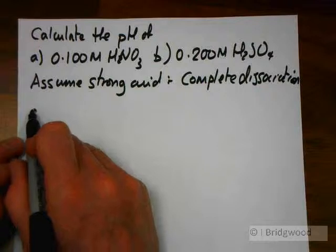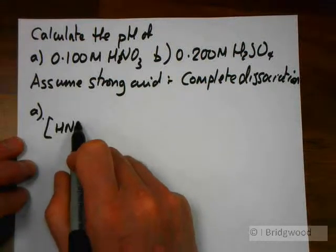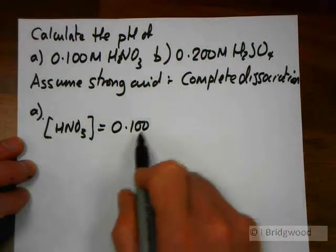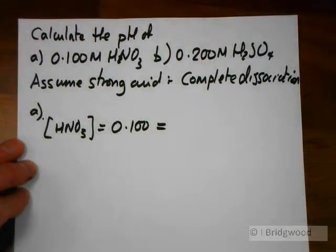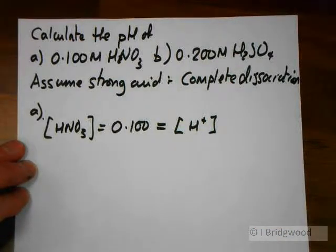So for the first one, fairly straightforward. Concentration of our nitric acid is equal to 0.100. And because we've got complete dissociation and it's a monoprotic acid, then the concentration of the nitric acid is the same as the concentration of hydrogen ions.